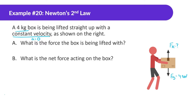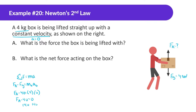The sum of all forces equals mass times acceleration. There are two forces: force applied going up and force of gravity going down, equal to mass of the box times acceleration. Force applied is unknown. Force of gravity is 40. Mass of the box is 4. And since it's moving with a constant velocity, acceleration is zero. So force applied minus 40 equals zero, meaning force applied equals 40 Newtons.